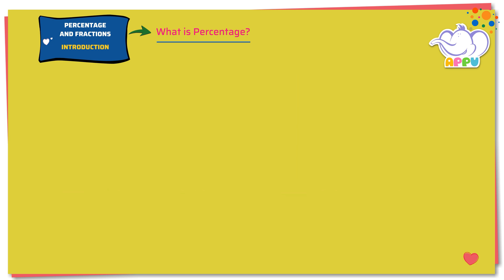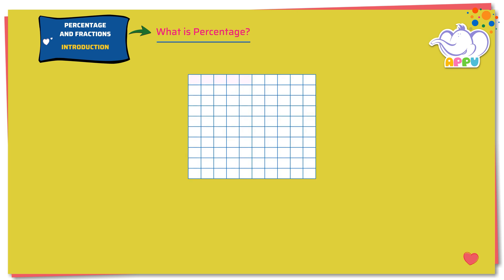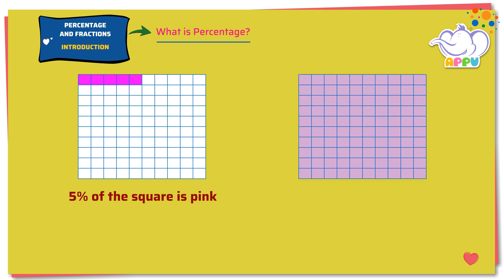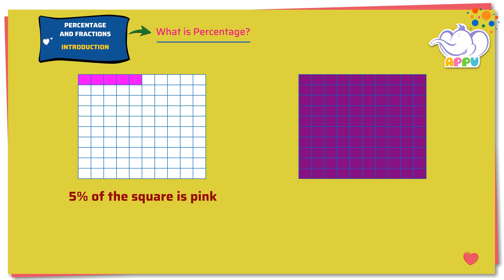Now let's shade 5 out of 100 smaller squares in pink — this means 5% of the square is pink. Now let's shade 100 out of 100 smaller squares in purple — this means 100% of the square is purple.